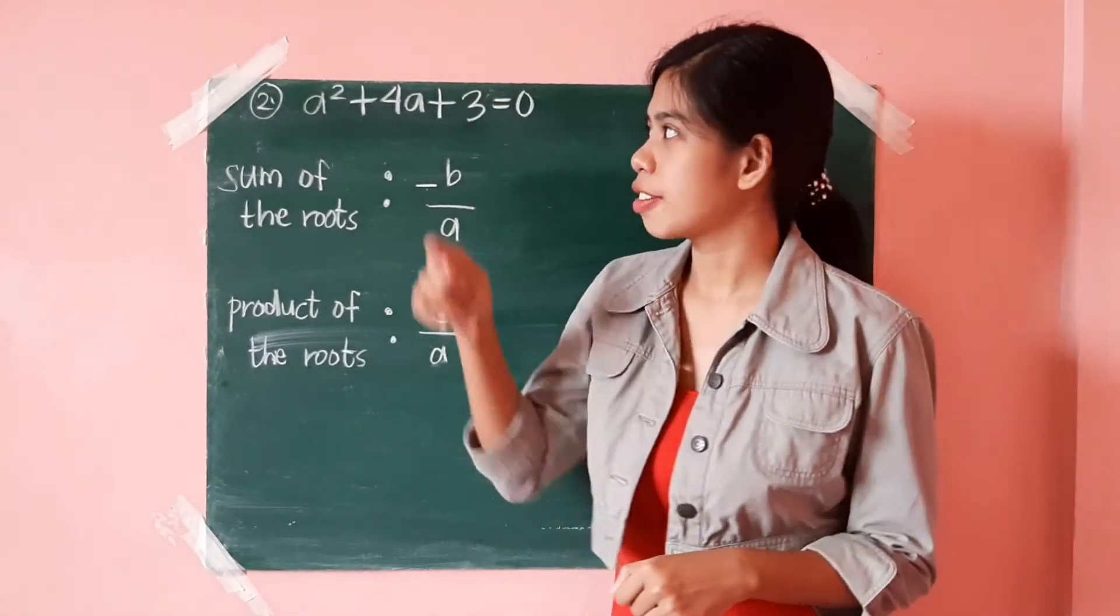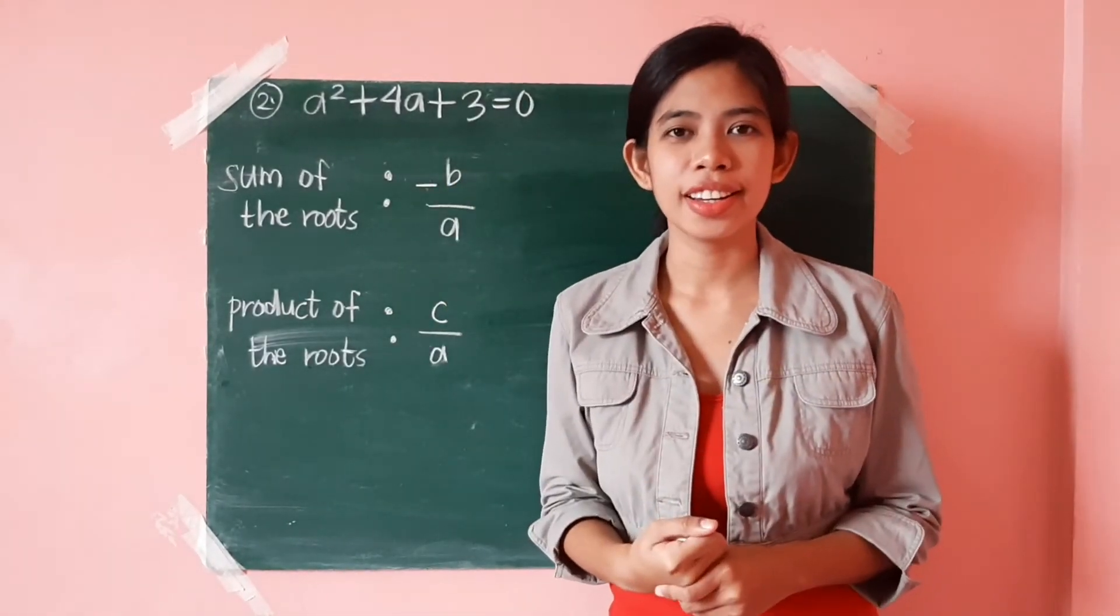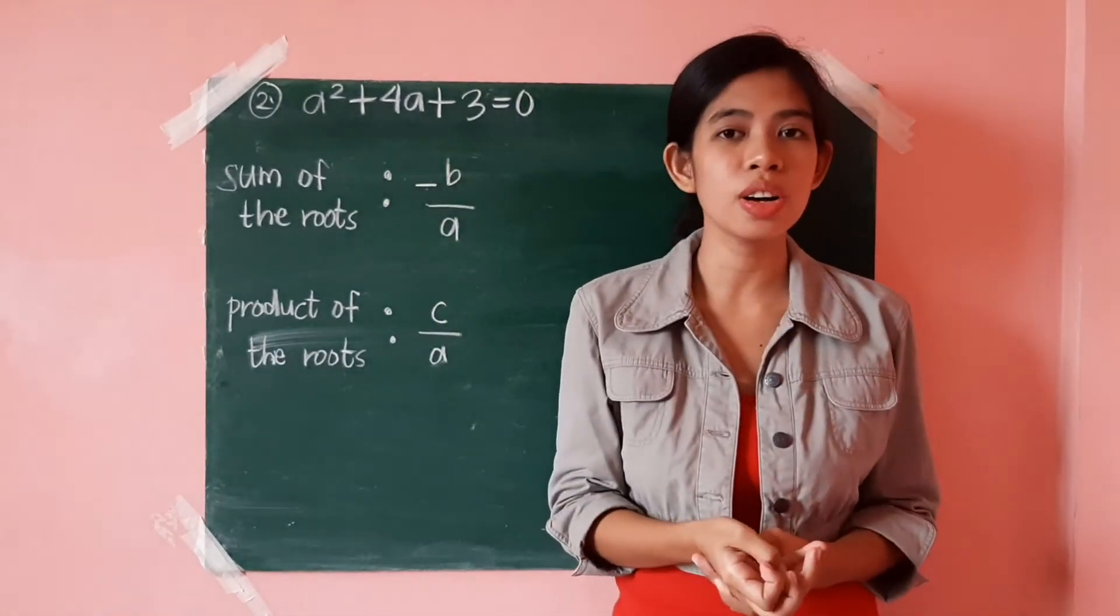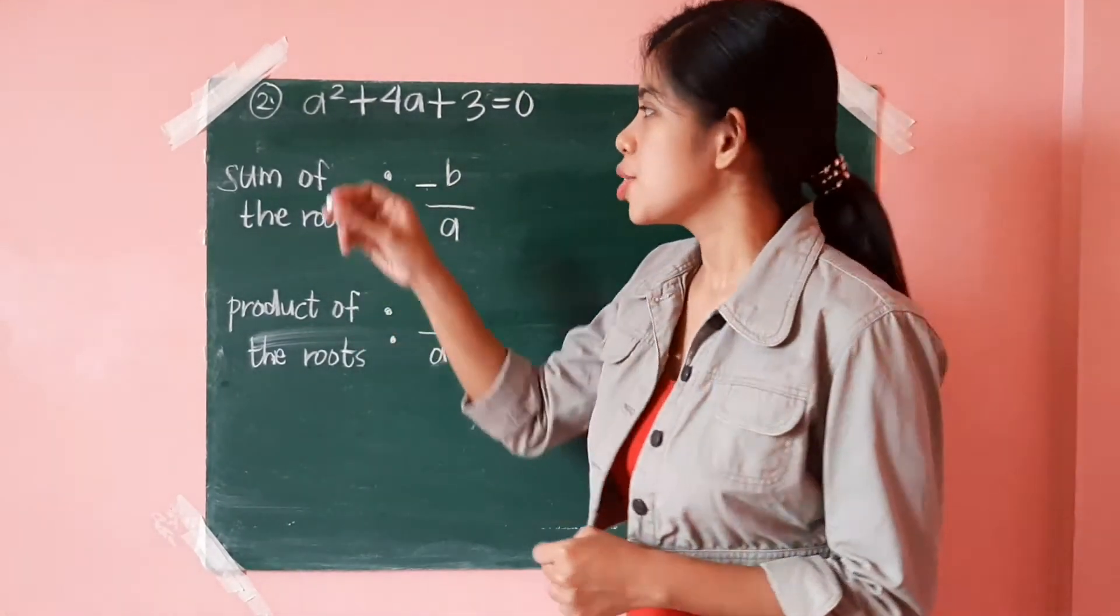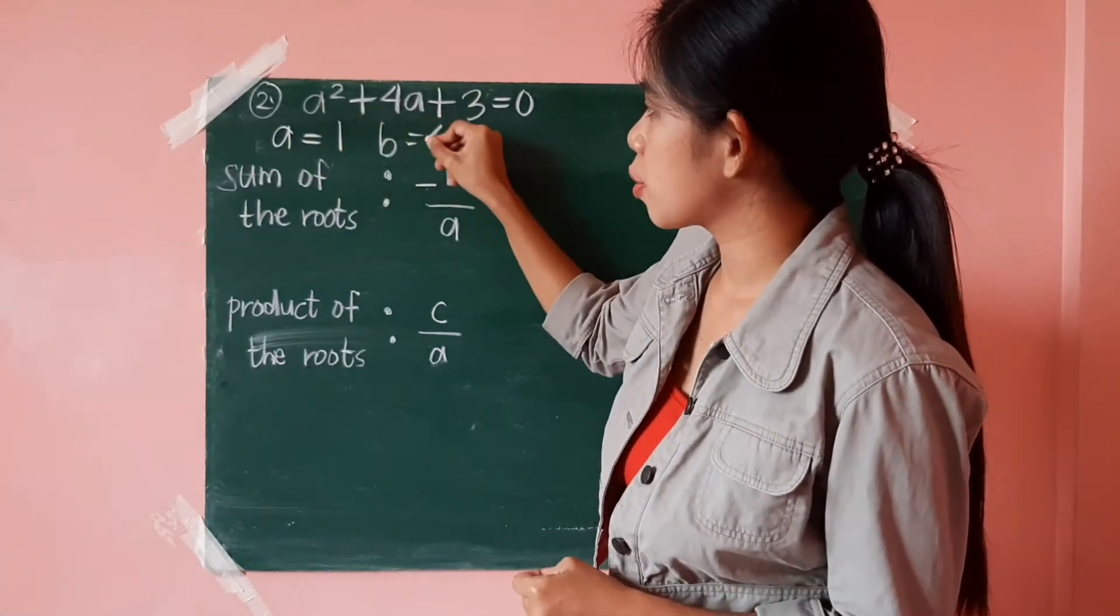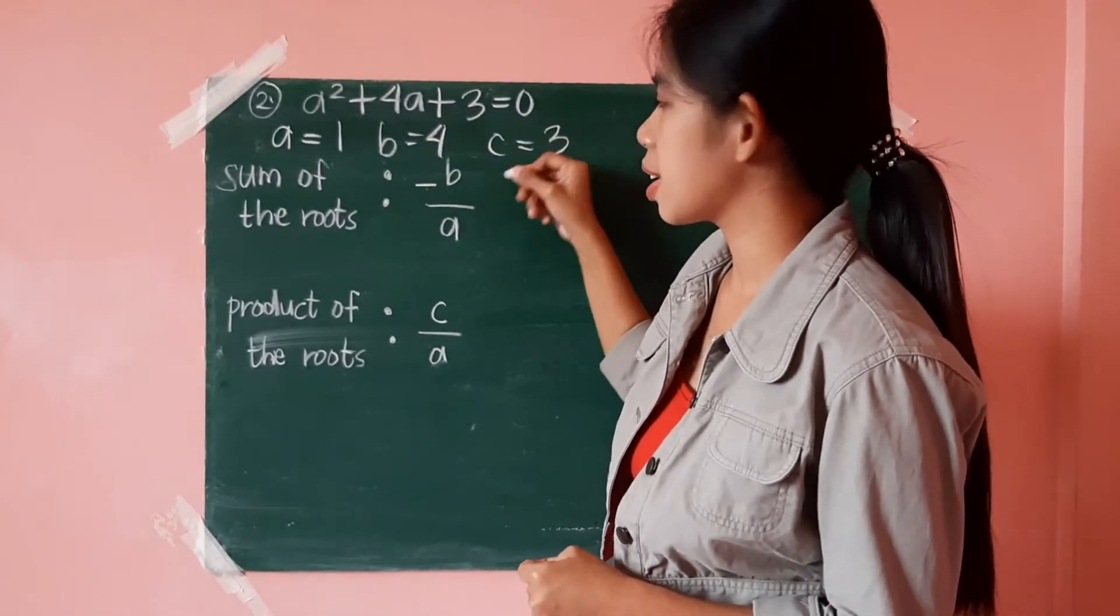Now, let us give this quadratic equation a try. So, this is a squared plus 4a plus 3 equals 0. It is written in standard form. So, you can identify the value of a as 1, the value of b is 4, and the value of c as 3.